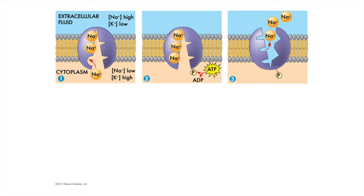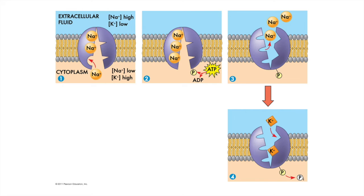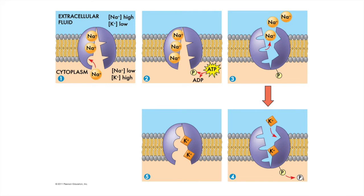The sodium ions are then released outside the cell, where sodium concentration is high and just got a little higher. Then two potassium cations on the outside of the cell may find their way into the transporter protein, which causes the phosphate group to dissociate from the molecule and the transporter changes shape again. This shape shift releases the potassium cations into the cytoplasm, making potassium concentration inside the cell even higher.